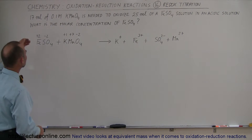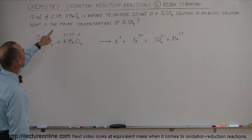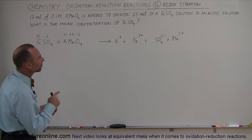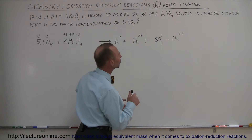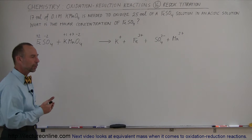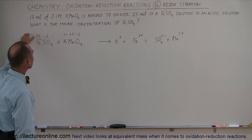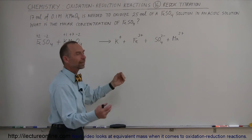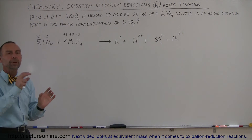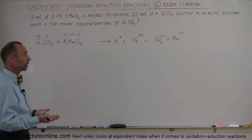So let's say that in this particular example we have 17 milliliters of a 0.1 molar potassium permanganate, and it's needed to oxidize 25 milliliters of iron sulfate solution in an acidic solution, so there's plenty of what we call free hydrogen ions available. We're trying to find the molar concentration of the iron sulfate so that they will neutralize each other — it all comes down to exchanging the proper number of electrons so that both the oxidizer and the reducer are no longer capable of oxidizing and reducing.